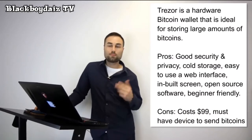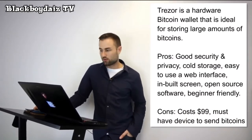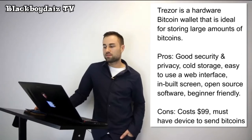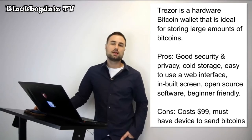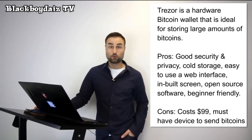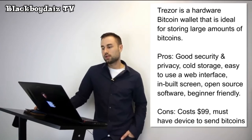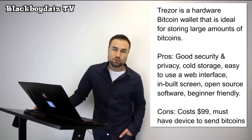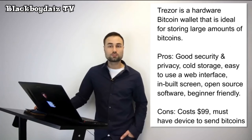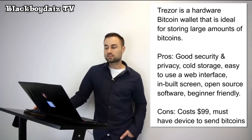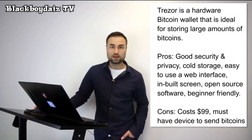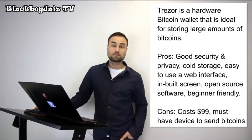Now I want to talk about two hard wallets. The first is Trezor — a hardware Bitcoin wallet ideal for storing large amounts of Bitcoin. Trezor cannot be affected by malware and never exposes your private keys, making it really, really safe. The pros are great security, privacy, cold storage, an easy-to-use web interface, built-in screen, open source software, and it's beginner friendly. The cost is around $100. You must have the device to send Bitcoins. I think it's an awesome device and I recommend it to most people.